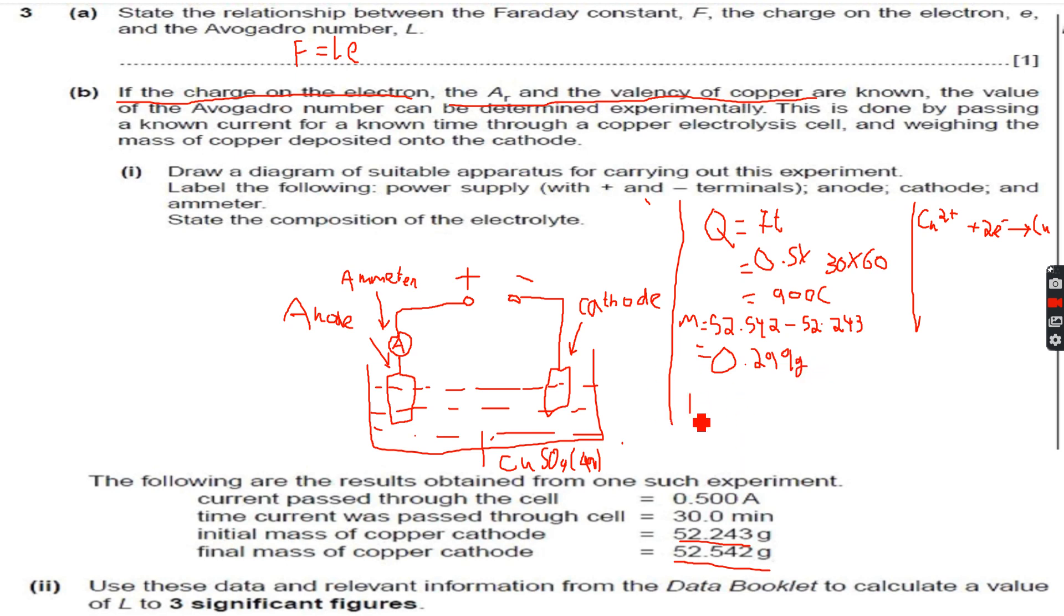So now we can calculate the number of moles of copper from the mass, which is 4.71 to three significant figures, 4.71 into 10 to the power of minus 3 moles.